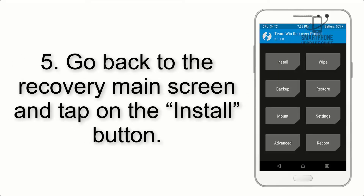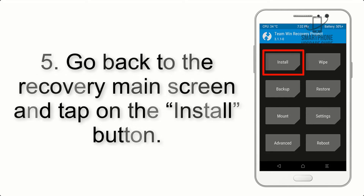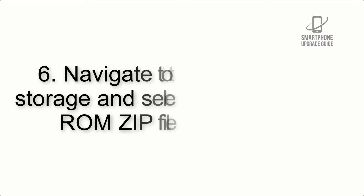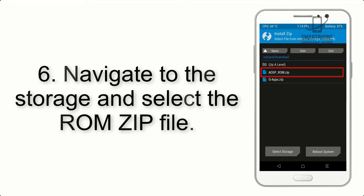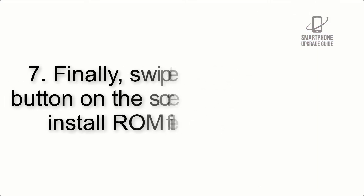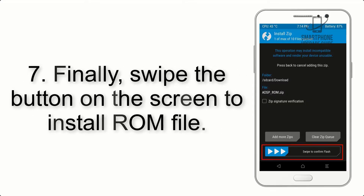Step 4: Swipe the button to wipe the device. Step 5: Go back to the recovery main screen and tap on the Install button. Step 6: Navigate to the storage and select the ROM zip file.